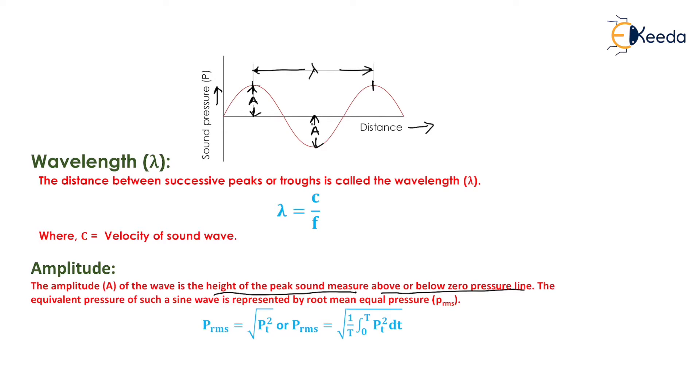The equivalent pressure of such a sine wave is represented by root mean square value, that is p_rms value. It can be determined by the square root of 1 by T, integration from 0 to T of p_t squared dt, where p_t is the pressure at any time t.